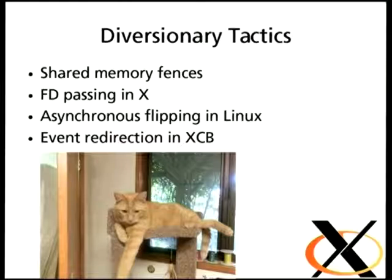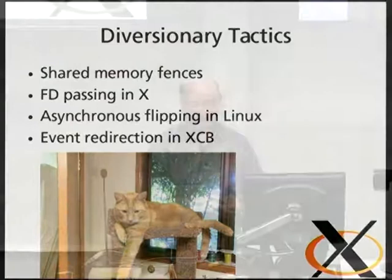That's my cat — he's another diversionary tactic. When the laptop starts doing a lot of benchmarking in wintertime, the cat thinks the laptop is his personal space heater. I'm going to talk about these four topics, which are a bunch of the work I did over the last year. I want to talk about shared memory fences and why glibc is broken. Linux is fine — glibc is broken. How to do file descriptor passing and what that involved. Some adventures supporting a new GL extension for swapping with tearing instead of without tearing. And what I had to do to convince the XCB guys that I really couldn't tolerate their event model.